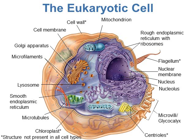Eukaryotic cells have a structure called a nucleus in the middle — it's a big structure roughly in the center. They also have other organelles, including mitochondria, chloroplasts, lysosomes, Golgi apparatus, and endoplasmic reticulum. We're going to go through those different parts, starting with the external structures and then looking at the internal ones.